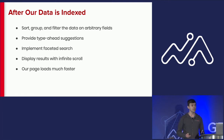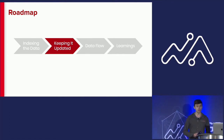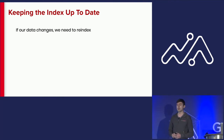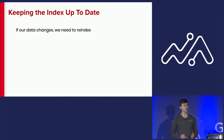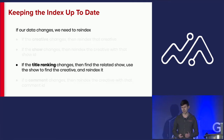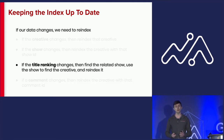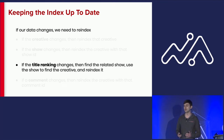But we can't just index our data one time — we have to keep the index up to date as things change. We already have Kafka events submitted from our backend when something changes, so the first step is to listen to those change events. We can hear a change event for the creative, for the show, for the title ranking, or for the comments. For now, let's focus on what happens if we hear a title ranking change event. We need to determine which creatives to re-index.